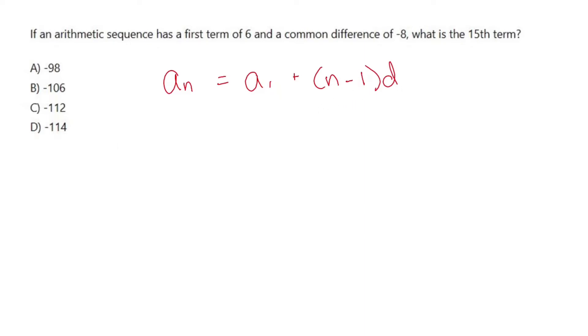All we have to do here is basically label stuff and plug stuff in. The first term, a sub 1, is 6. Common difference, d, is negative 8. Since we care about the 15th term, 15 is going to be n.